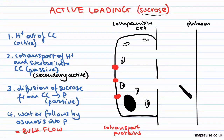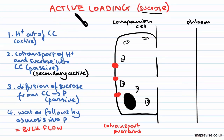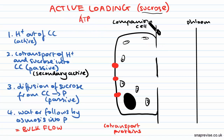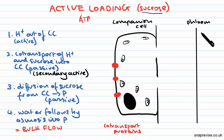Sucrose is said to be actively loaded into the phloem — these are keywords you will need to use in any exam answers. The phloem doesn't exist by itself; it also has companion cells to help with active loading. These companion cells have lots of mitochondria, showing that this process is active and therefore uses ATP. They also have large nuclei. Not shown in this diagram are sieve plates, which are perforated end walls between each of the elements that make up the phloem.